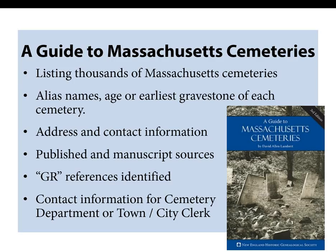I am very pleased to announce that A Guide to Massachusetts Cemeteries is now available. If you are listening on November 15th and are interested in a signed copy, we're running a special — go to AmericanAncestors.org, go to our sales tab until midnight tonight, and order a copy. I'll personally sign it for you, and each book will be sent out in the coming weeks. My book lists thousands of Massachusetts cemeteries with an alias, name, age, or the earliest gravestone of each cemetery. It provides the address and contact information for each cemetery when applicable, the published and manuscript sources — including manuscripts here at NEHGS and a large collection in the DAR Library in Washington, D.C. All of the GR references are included.